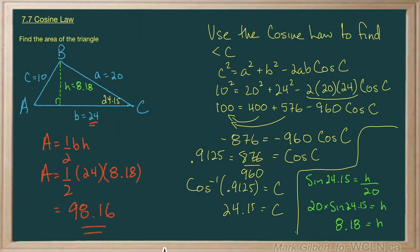So three steps here. First step, use the cosine law to find the angle. Second step, use right angle trigonometry to find the height. And third step, find the area.